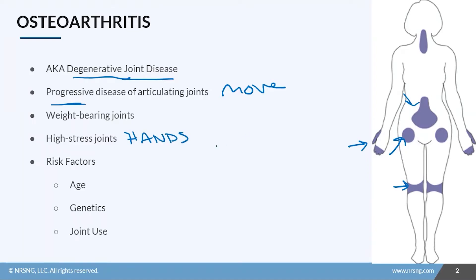Risk factors for osteoarthritis are age — older is more likely — genetics, and use of the joints. These high-use, high-frequency joints are more likely to have problems. The problem is we can't really do much about that; we have to function and we need our joints to do that.